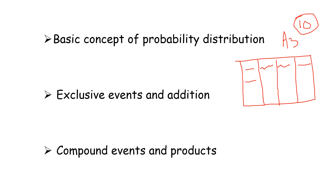The mathematical definition of probability is called prior probability. The statistical definition is called empirical or posterior probability. These are two important definitions to note on your mind map.